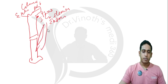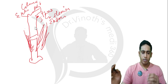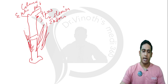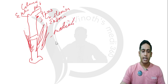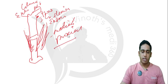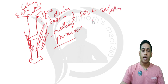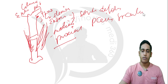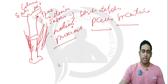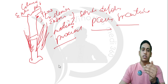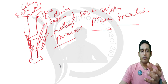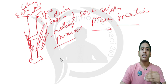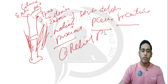Here the adductors and vastus will be attached. They will be equally displacing the fragment medially, and they will also be displacing the distal fragment proximally. Because of this, the patient will have severe deformity as well as pain at the fracture site. So we will apply a traction — either below-knee skin traction or skeletal traction — to counteract this force acting at the fracture site, relieving pain and reducing the fracture.